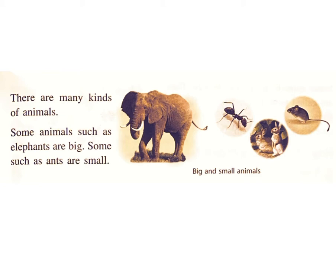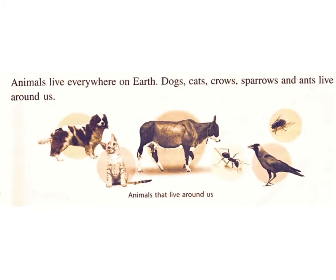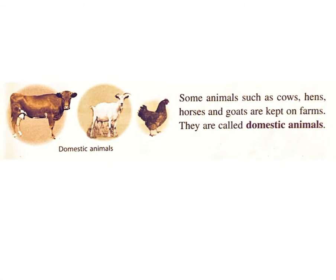Some animals such as elephants are big. Some such as ants are small. Animals live everywhere on earth. Dogs, cats, crows, sparrows, and ants live around us. Some animals such as cows, hens, horses, and goats are kept on farms. They are called domestic animals.